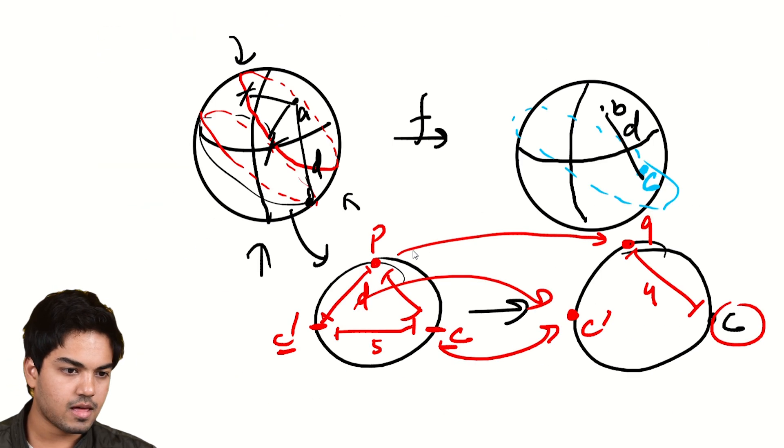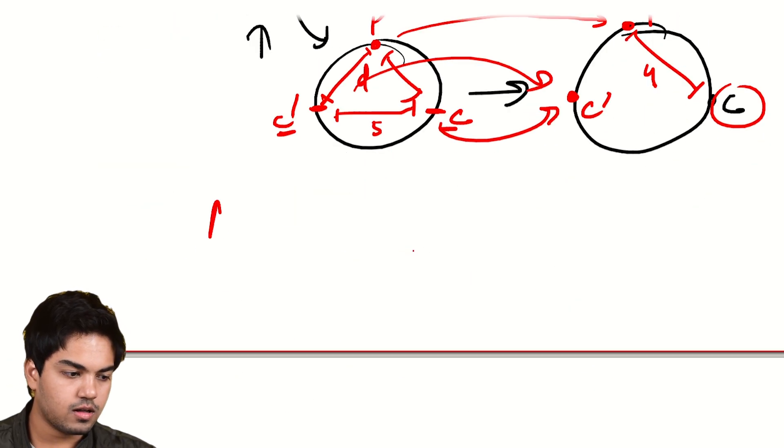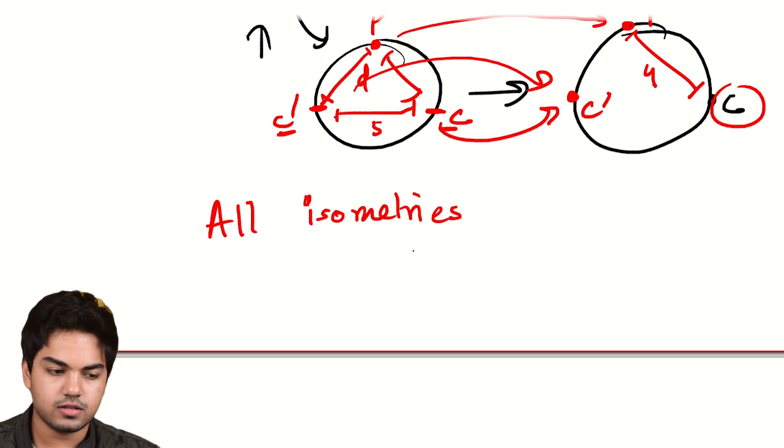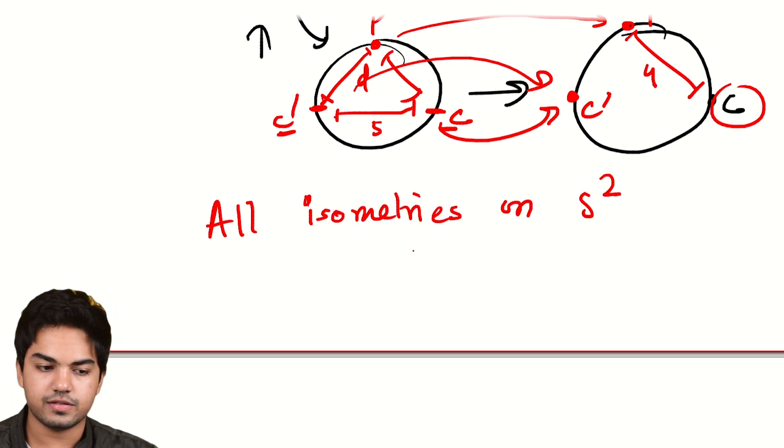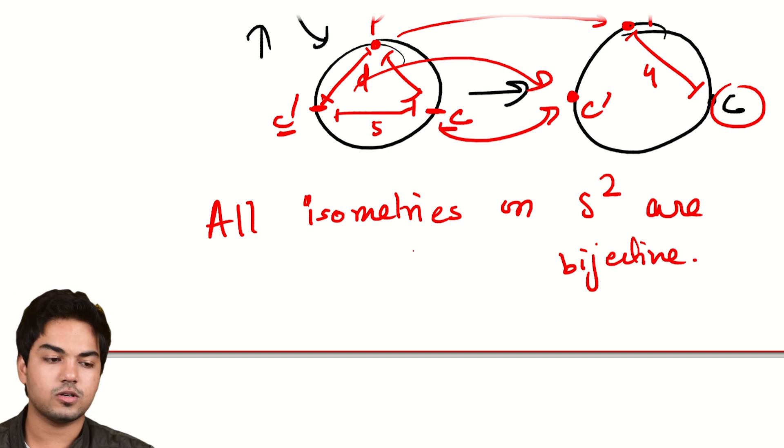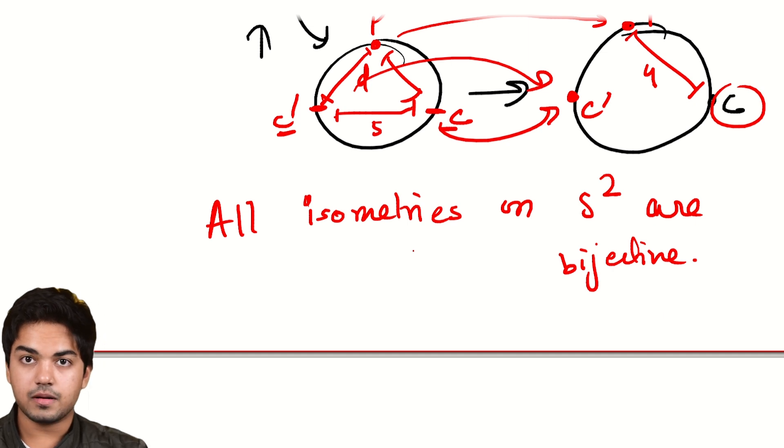So we've proven that not only are isometries surjective, they're also injective and hence they're bijective. We've proven that all isometries on S², of course, on the unit sphere, are bijective. That's a really cool result, if you would stop and think about it, that you can't sort of move points on a sphere keeping distances fixed without making the map bijective. That's a restriction you're put on.